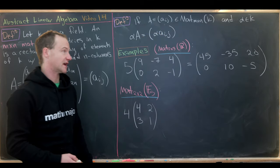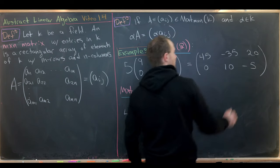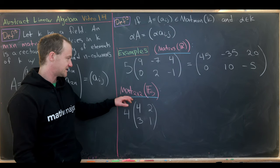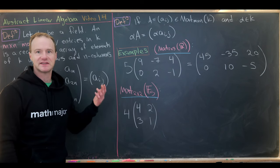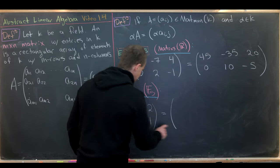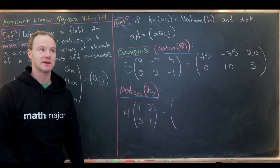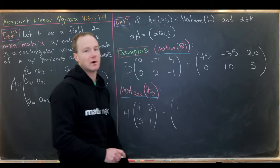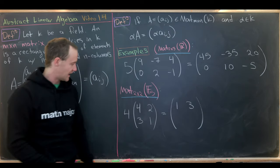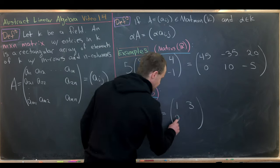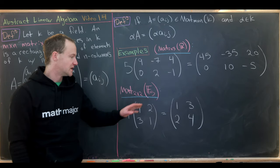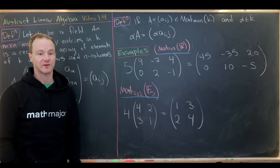Let's look at another example over a finite field. Working over 2 by 2 matrices with entries in F5 — the integers modulo 5 — we multiply 4 onto the matrix [4, 2; 3, 1]. So: 4 times 4 is 16, which is 1 mod 5; 4 times 2 is 8, which is 3 mod 5; 4 times 3 is 12, which is 2 mod 5; and 4 times 1 is 4. So that scalar multiple gives us [1, 3; 2, 4].